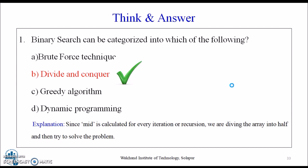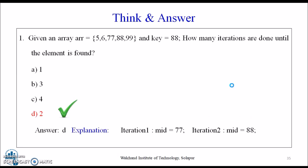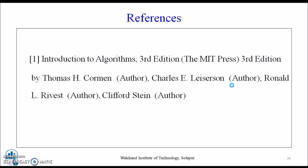Next question: given an array and key is equal to 88, how many iterations are done until the element is found? Answer: two iterations. Explanation: first iteration at mid equal to 77, second iteration mid equal to 88.